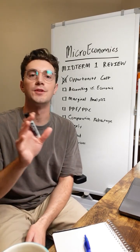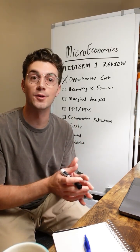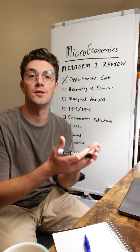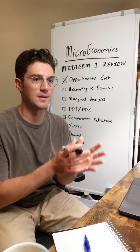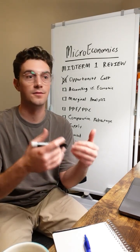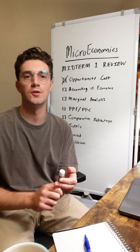All right, next up, accounting versus economic profit. Accounting profit does not consider the implicit cost of that next best alternative. Accountants are only focused on how much revenue you're making minus the explicit cost of what you're doing, like your expenses, the wages you're paying, etc.